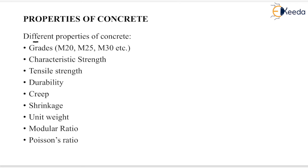Concrete has different properties. The first one is grade, that is M20, M25, M30. Next one is the characteristic strength, another one is tensile strength, another one is durability, the next one is creep, another one is shrinkage, next one is unit weight, another one is modular ratio, and the last one is Poisson's ratio.